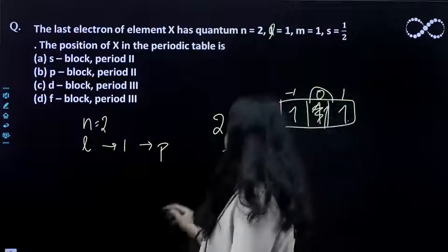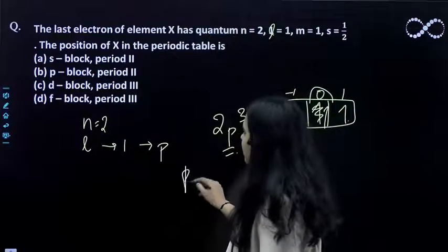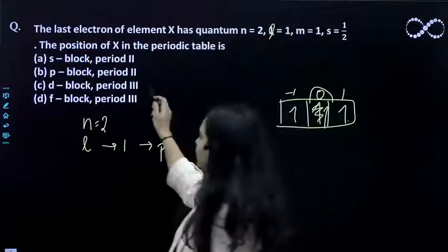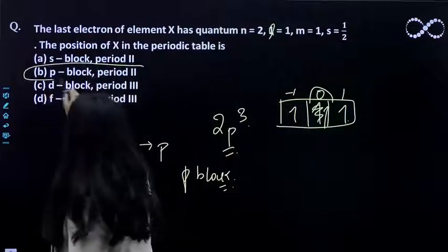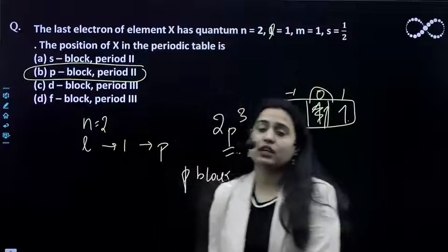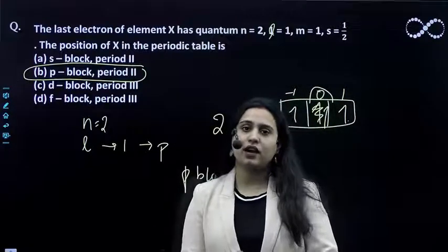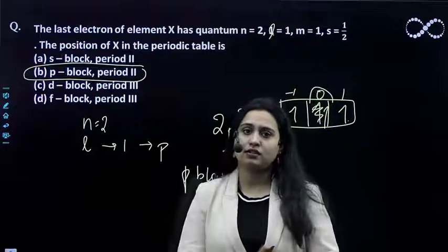Therefore the answer is: it is a p-block element of period second. Second period because it's in the second shell, and p-block because the l value is 1. Therefore B is the answer. Thank you.